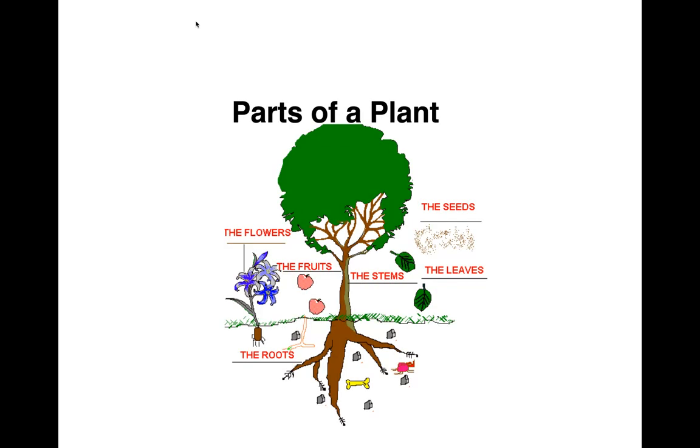There are different parts of the plants: we have seeds, the leaves, the stems, the fruits, the flowers, and the roots. In this picture they show all these different parts and components.